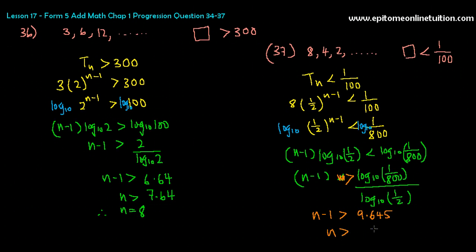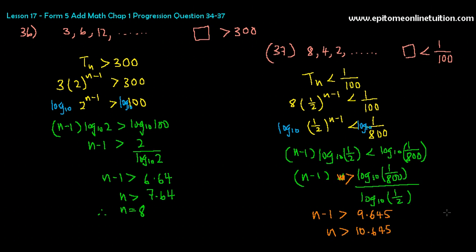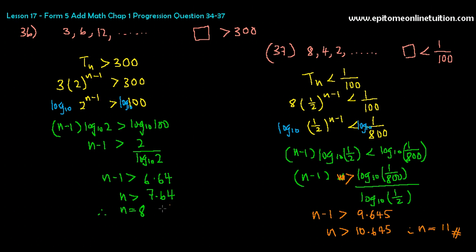So at the end, n would be bigger than 10.645. You can see that if you forget to change your inequality sign, you will get less than, and then you'd put 10, which is wrong. In this case, n would be 11, because n is bigger than 10.645. The next nearest integer to n would be 11. But if you forget to change the inequality sign, your n ends up less than 10.645, and you'd say n is 10, which is wrong. So the first term for this GP that becomes less than 1 over 100 would be the 11th term. That's how you answer questions on terms. In the next video, we are going to do sum of GP — to find the sum of the first n terms for GP. I will see you in the next video.